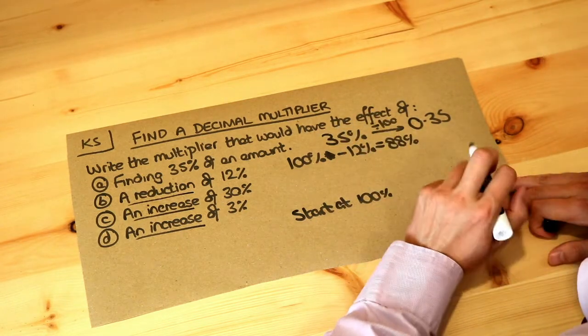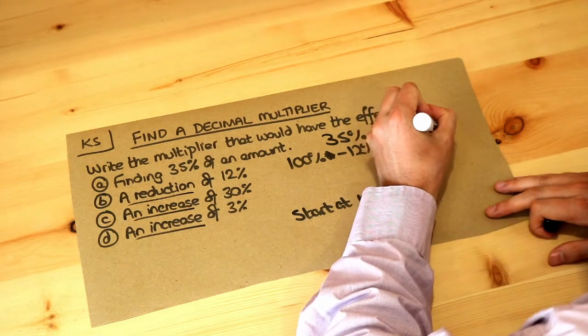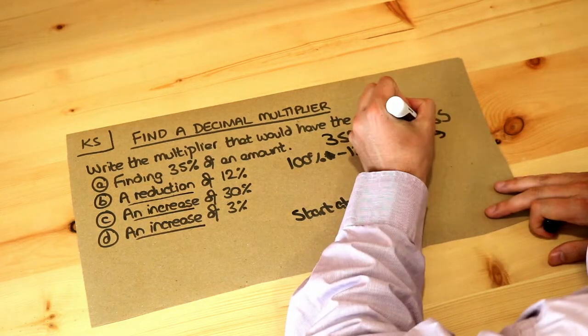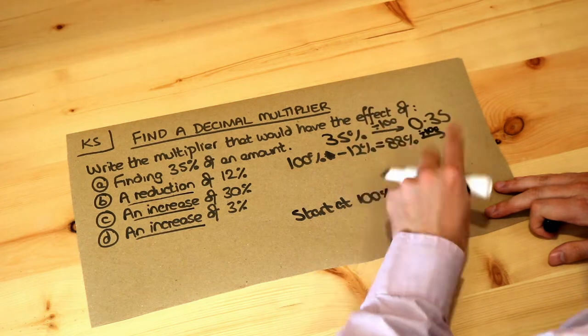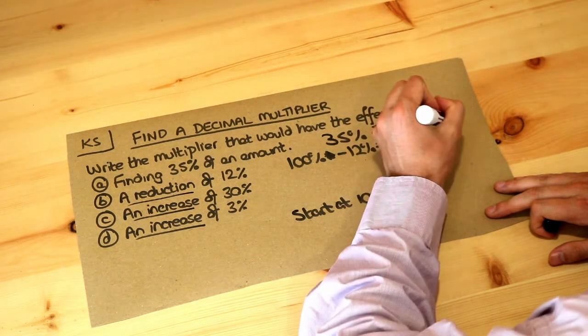That will reduce it by 12%. So we do the same as we did above, we convert that percentage into a decimal divided by 100. And 88% divided by 100 is 0.88.